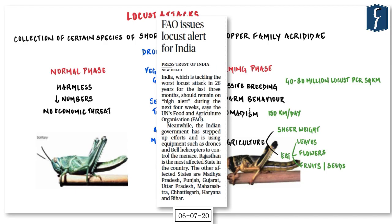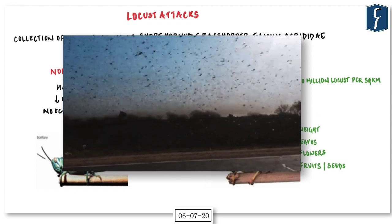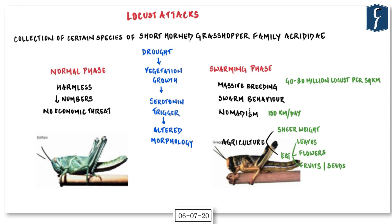The next article appears on page number 10: 'FAO Issues Locust Alert for India.' India has been tackling the worst locust attack in 26 years for the last three months, and FAO has said there will be no relief for the next four weeks. This covers GS3 environment, economy, and prelims perspectives. We will understand the insect's life cycle, swarming phase, the path of locusts, and government response.